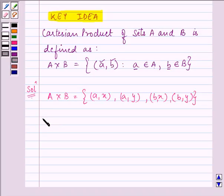Now here, the first element of the ordered pair will belong to set A, and the second element of the ordered pair belongs to set B.